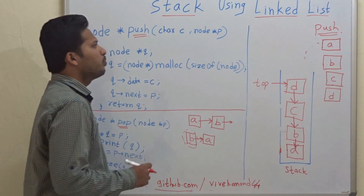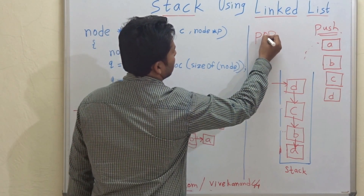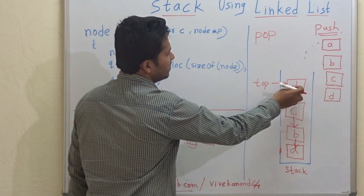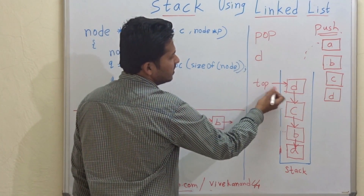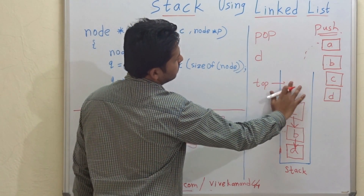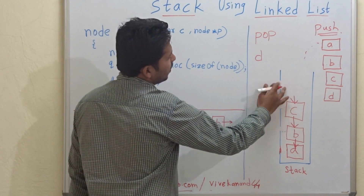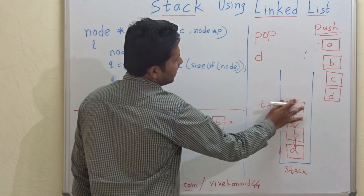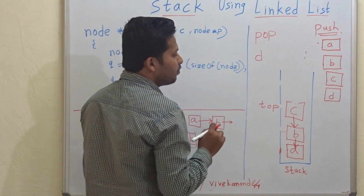Now let's see the pop operation. Whenever you call pop, you have to print the top element, that is D, and then delete this node. The top will then point to the next node, which becomes the new top node. This is how we pop elements.